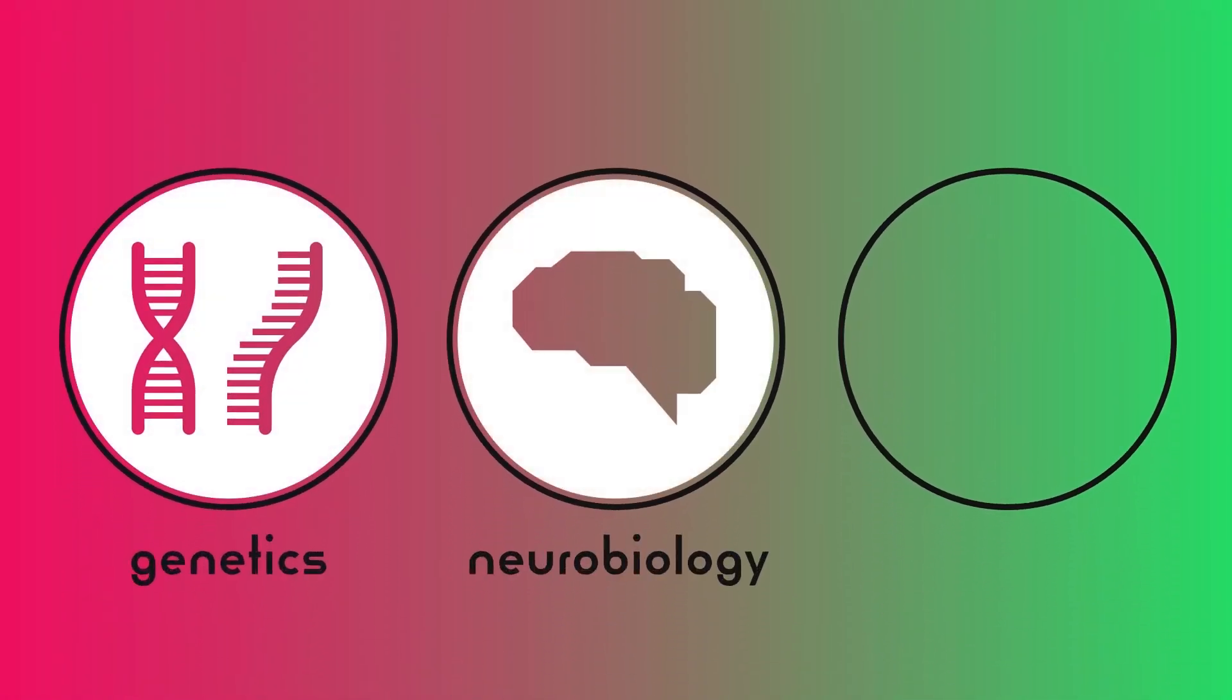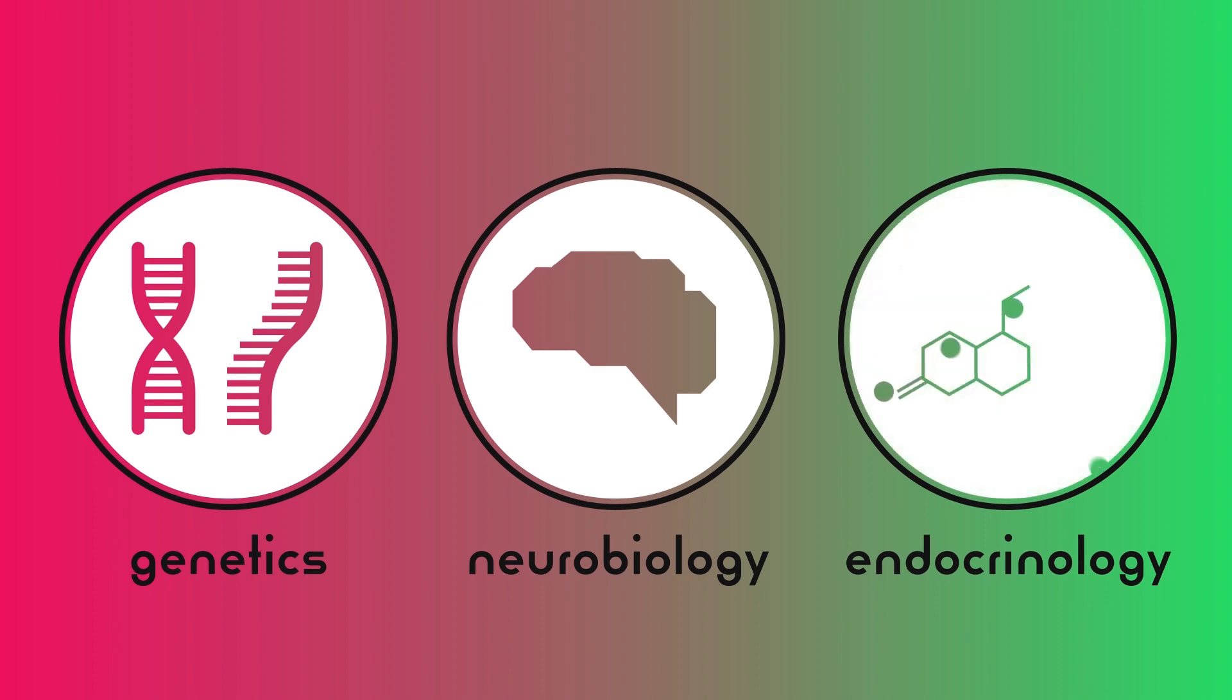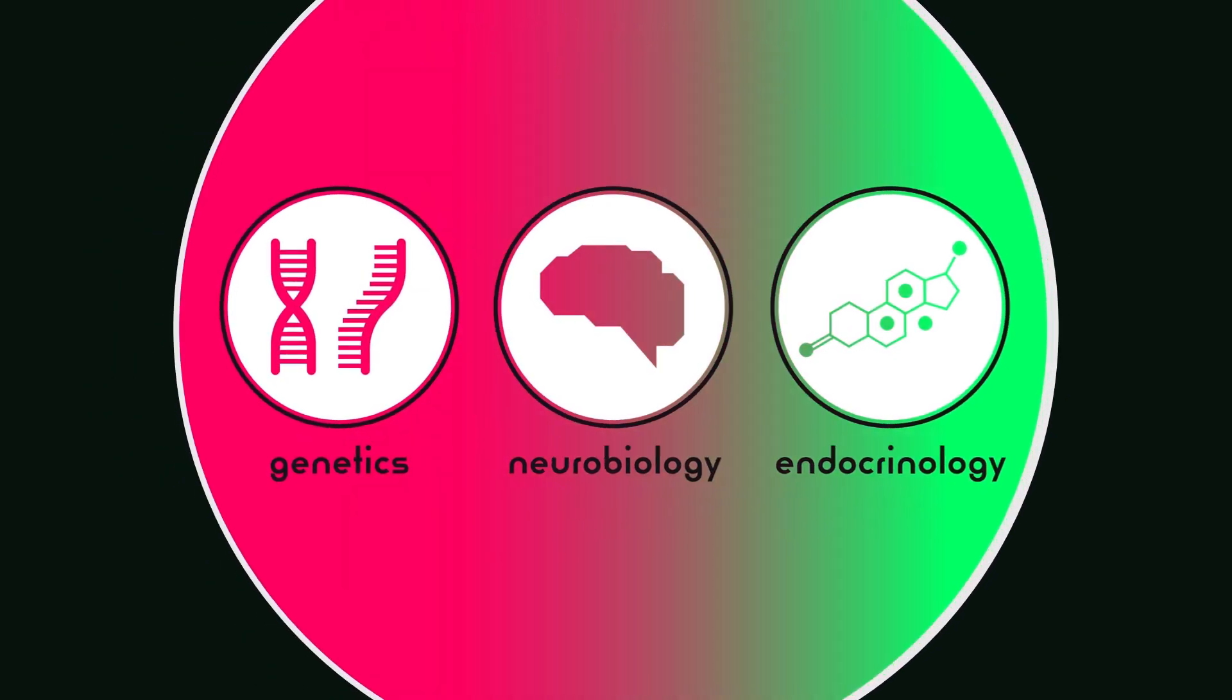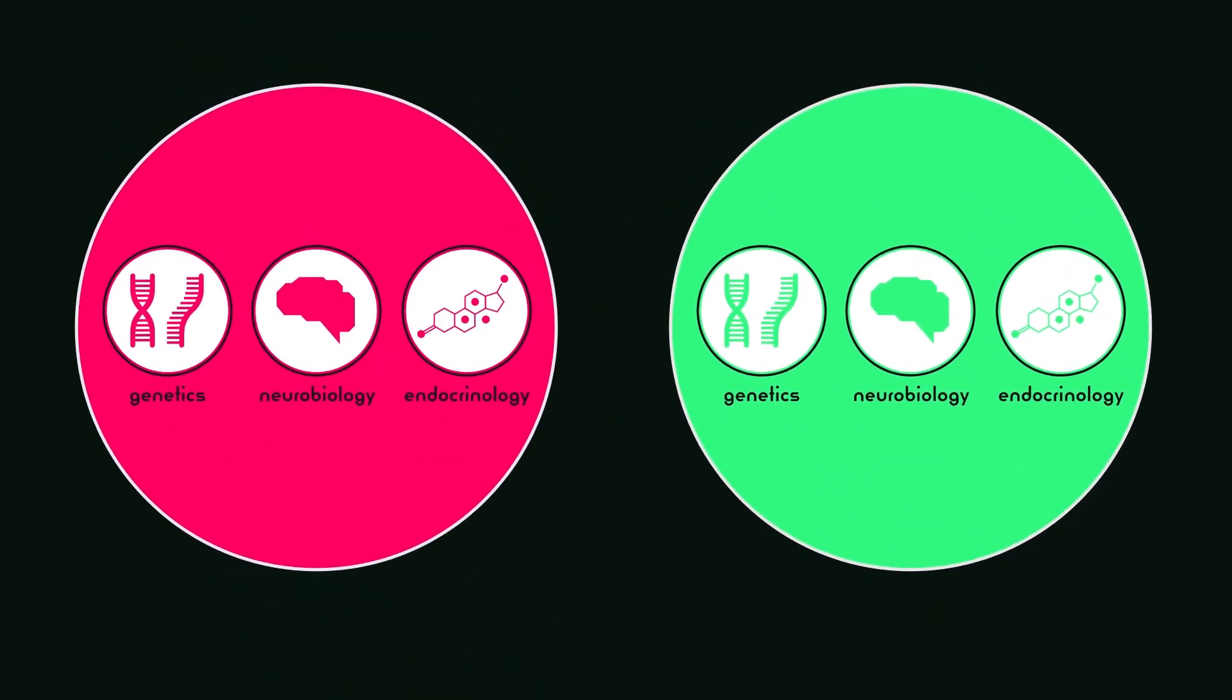In conclusion, you may notice a pattern in all three aspects, genetics, neurobiology, and endocrinology. In all three categories, variation does not mean sex is on a spectrum, but rather that sex-related traits are on a spectrum within each sex.